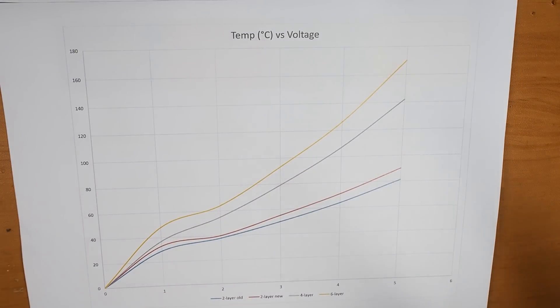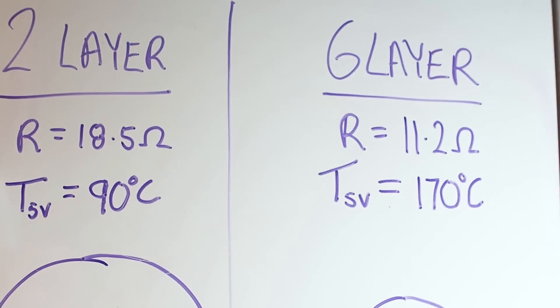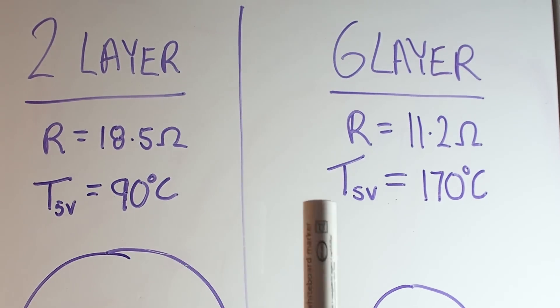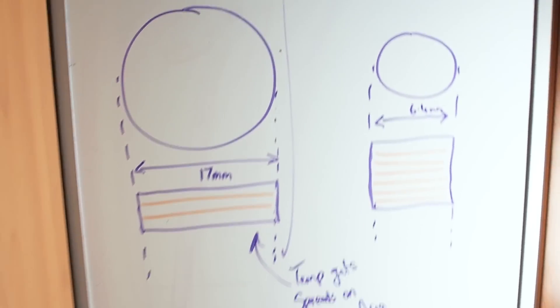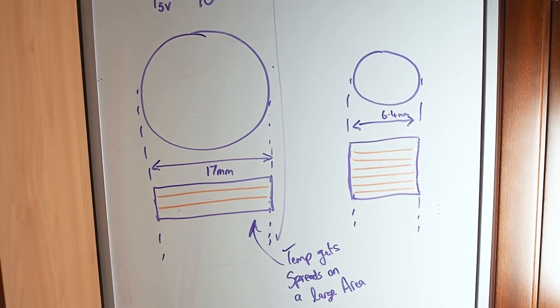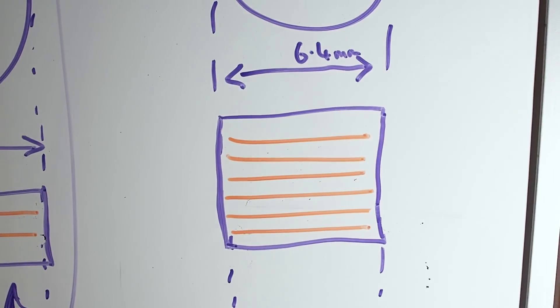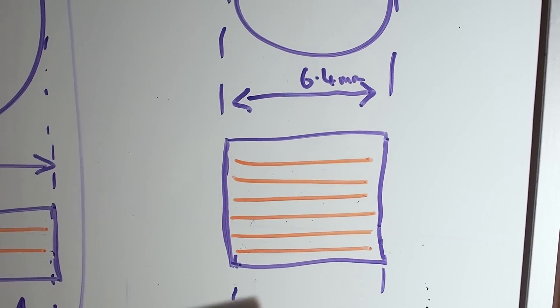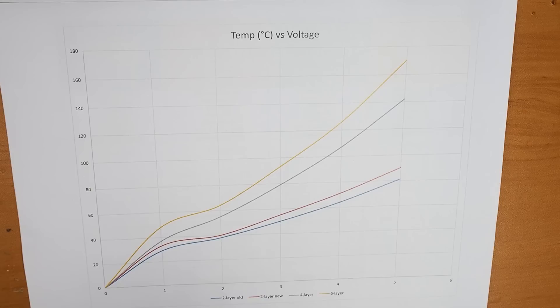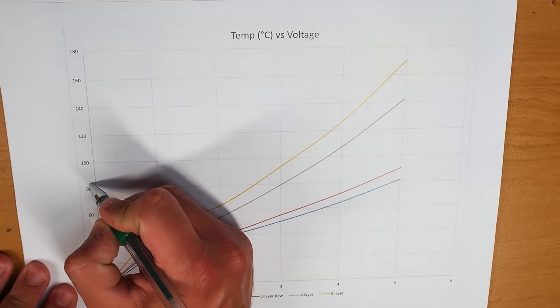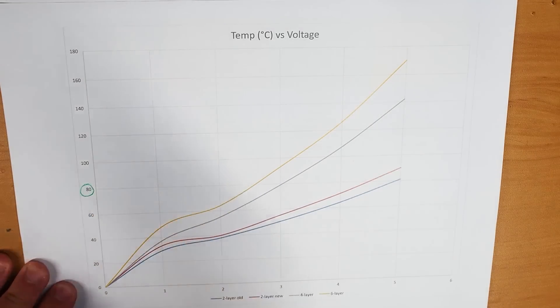And this graph over here shows us how hot things are getting. I don't think that we can just blame the resistance alone for this thermal difference because remember that the two layer coil has a larger area, while the six layer coil has all the turns jam-packed in a smaller one. So each layer is like heating up the same tiny region. Personally I think 80 degrees Celsius is the limit at which we can drive our coil.